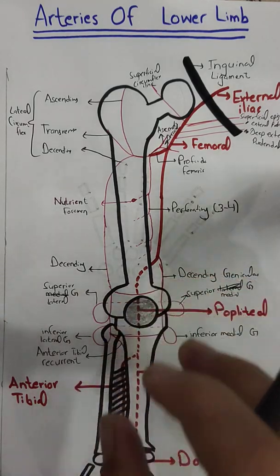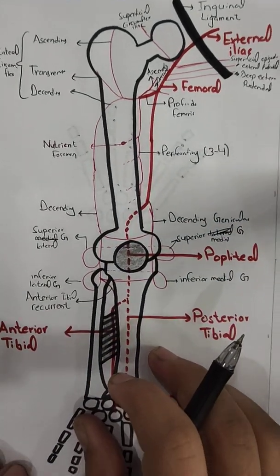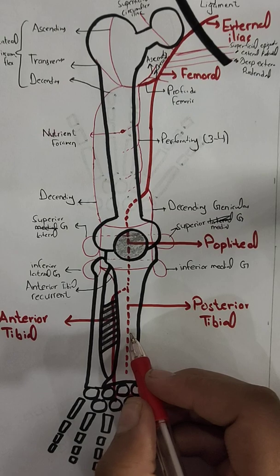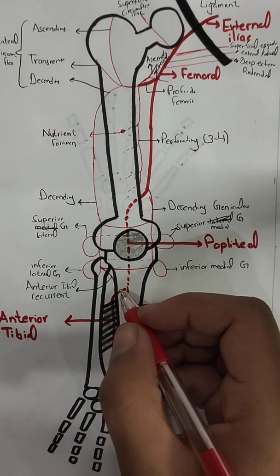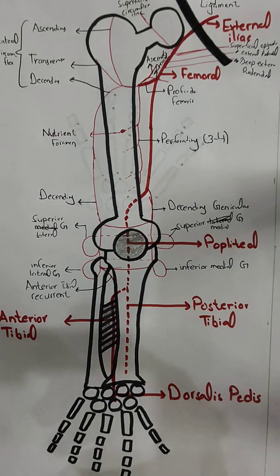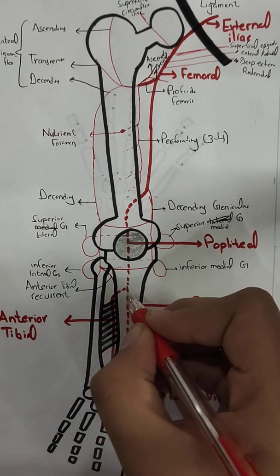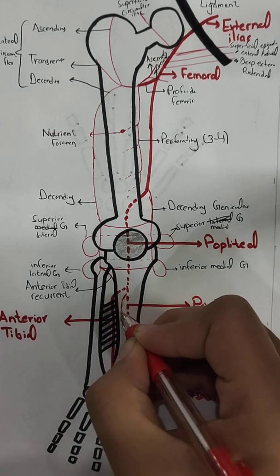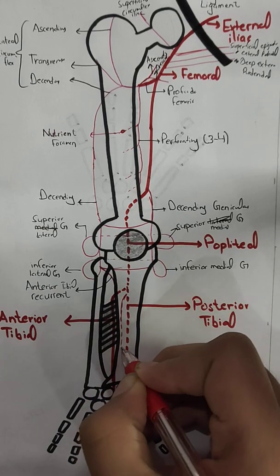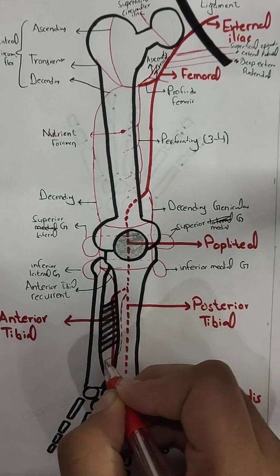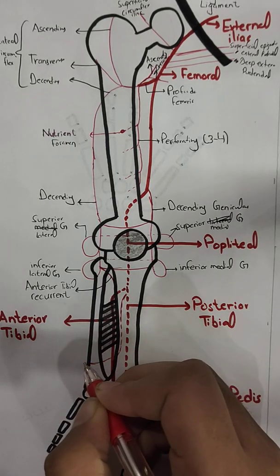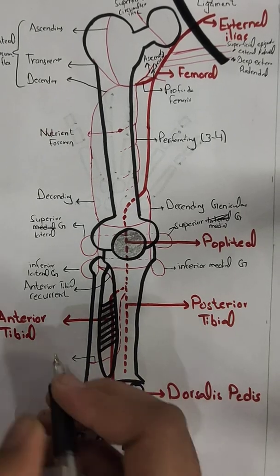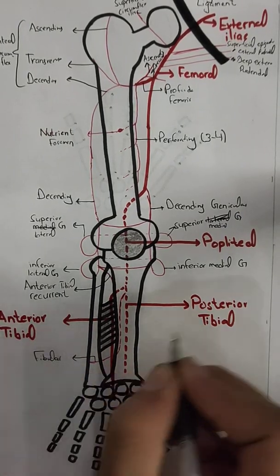The posterior tibial artery gives off a branch called the peroneal artery, or fibular artery. This runs along with the posterior tibial on the posterior side, then comes to the anterior side to supply the muscles of the lateral compartment of the leg.